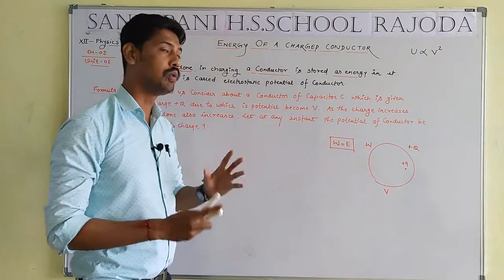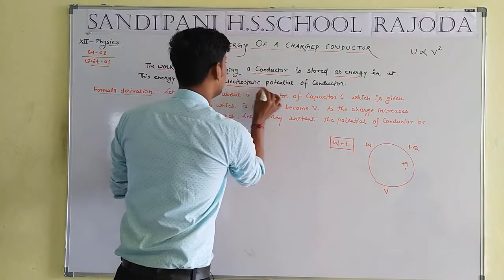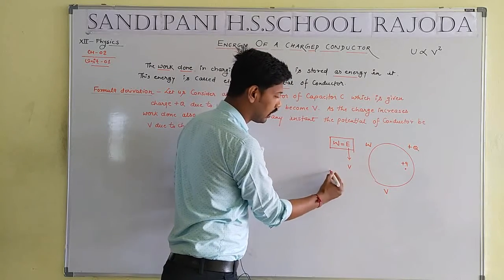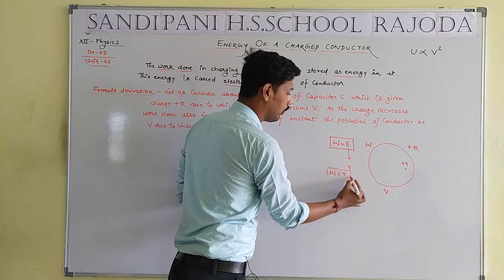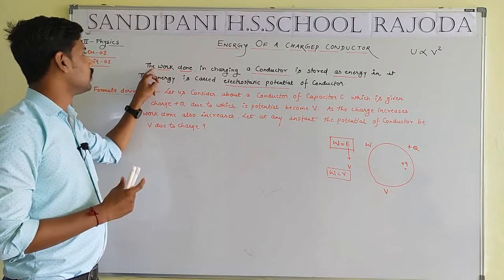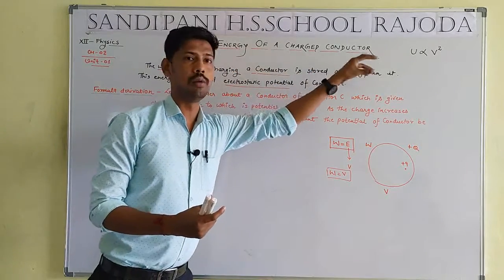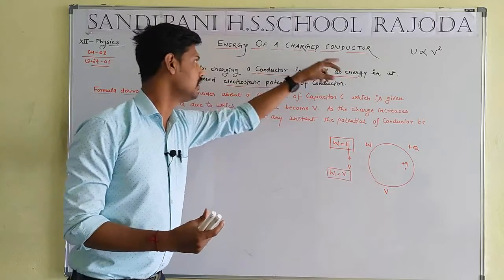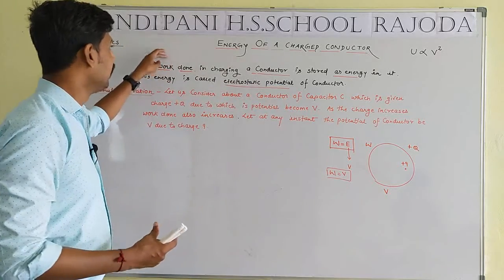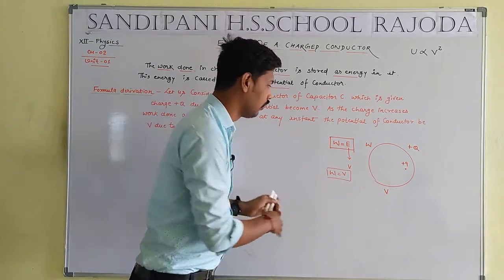The work done will be stored in the form of energy, that means W will be equal to E. This energy is called electrostatic potential energy. So indirectly, the work done is known as the electrostatic potential, meaning W will be equal to V.